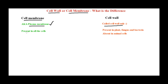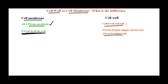The cell membrane or plasma membrane is present in all cells — this is the first difference. It doesn't matter what cell you are talking about; all cells have a plasma membrane, whether animal cells, plant cells, or bacterial cells. Whereas the cell wall is absent in animal cells. Cell wall is present in plant, fungus, and bacteria, but not in animal cells.